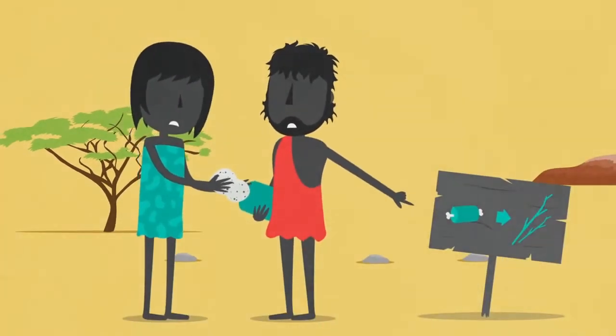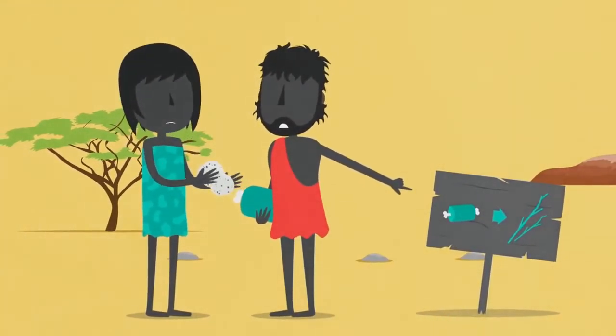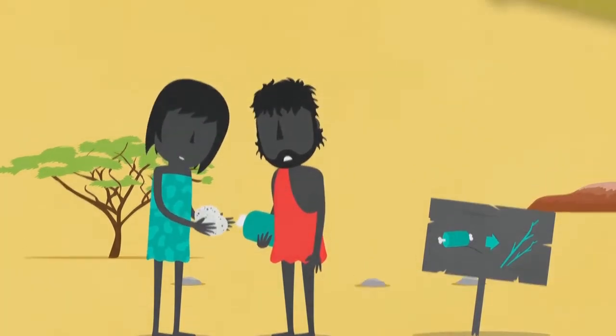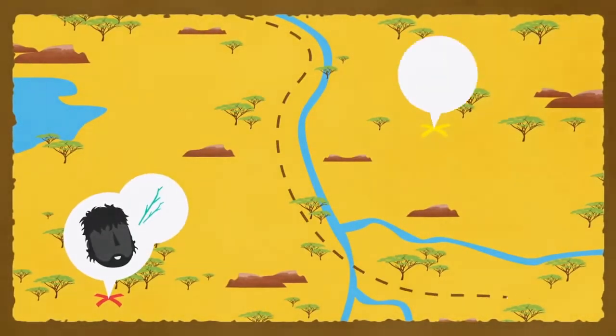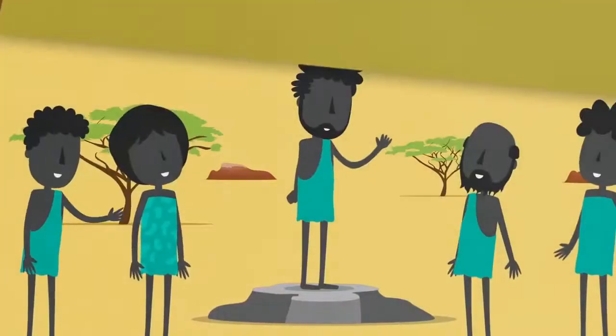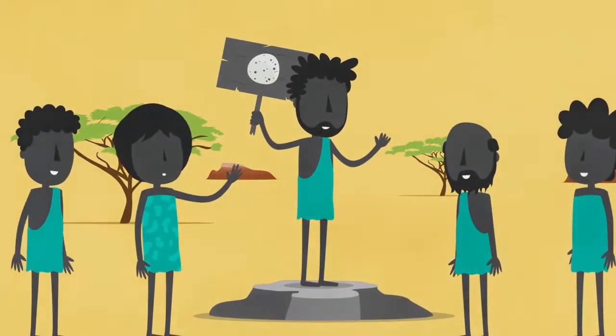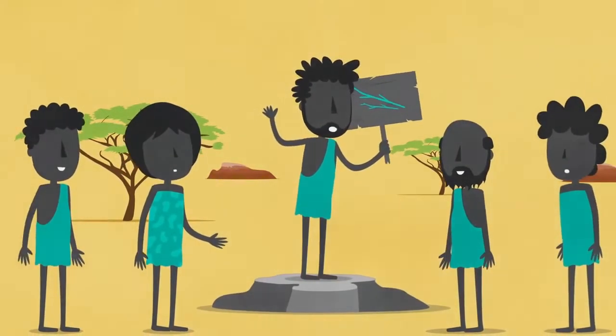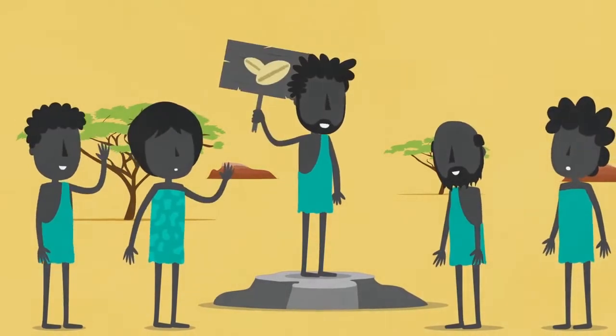They needed a universal ledger, something that could serve as a universal form of money so people could interact with others outside their own community. But they couldn't just use anything. To establish a system that would work on a large scale, they had to pick something that was universally scarce, divisible, transportable, durable, recognizable, and fungible.